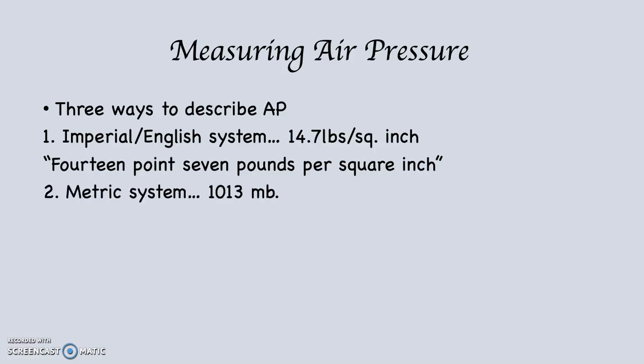What's generally used is the metric system, of course. And on an average day at sea level using the metric system, there are 1013 millibars of air pressure. MB means millibars — it's usually written lowercase m, lowercase b: 1013 mb. What does that mean? It means the same thing as 14.7 pounds per square inch. All we're doing is using more or less a foreign language.